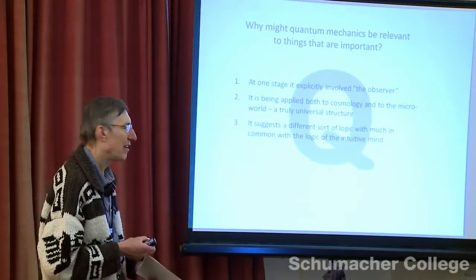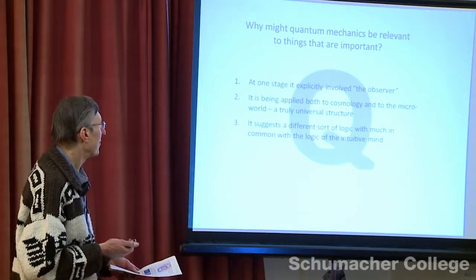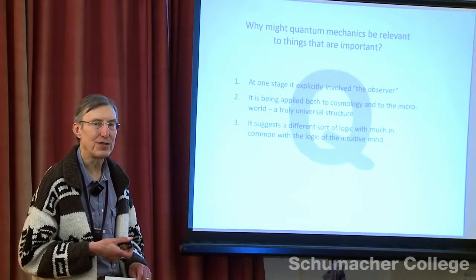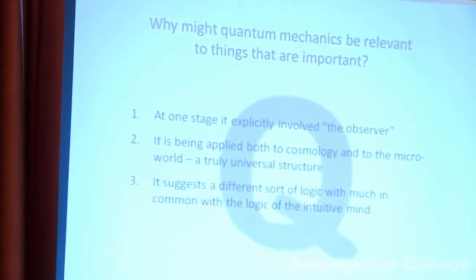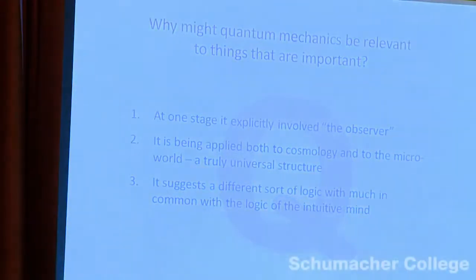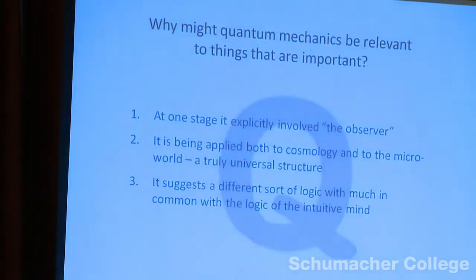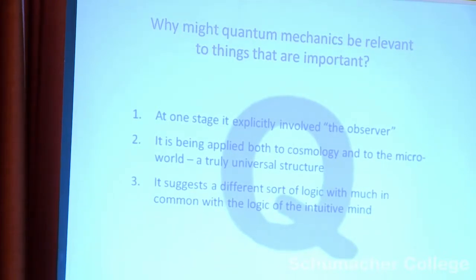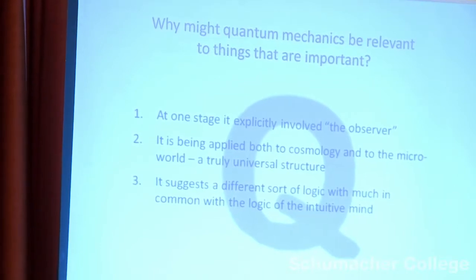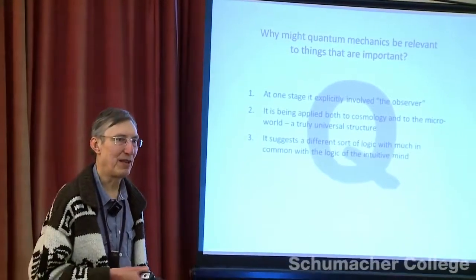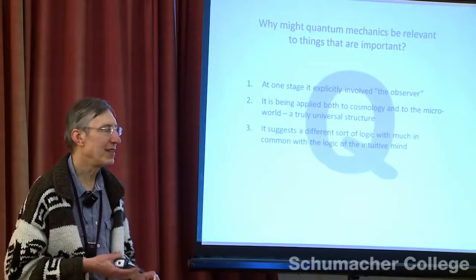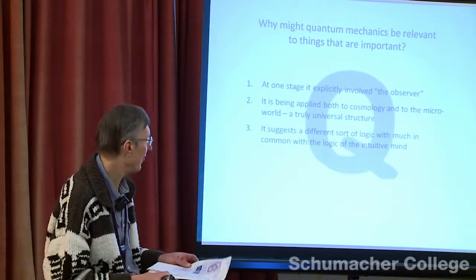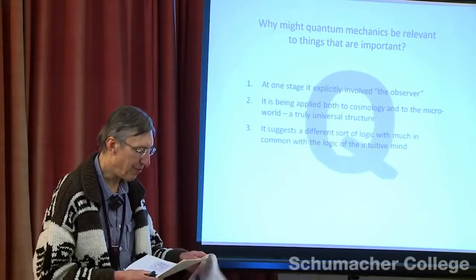Finally, and for me most interesting, fairly recent work over the last ten years suggests that the best way of looking at quantum theory is to say that it requires us to use a different sort of logic. The sort of logic thought of in this context is the kind some psychologists have been looking at as a way of understanding the intuitive part of our mind. This suggests quite a big shift in the way we need to think about things.